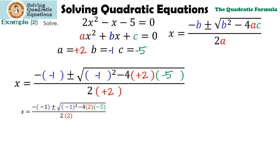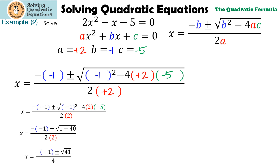I just rewrote it so it's a little easier to see. The next step is to simplify. Negative 1 squared is 1; negative 4 times 2 times negative 5 is positive 40; and then the bottom, we still have 2 times 2. 1 plus 40 is 41, and 2 times 2 is 4. When we simplify again, note that negative negative 1 gives us a positive, so that's how I have 1 plus or minus the square root of 41 over 4.